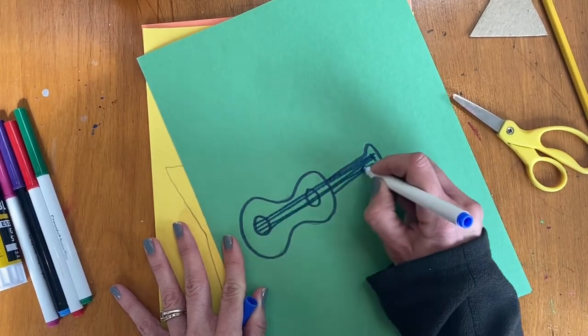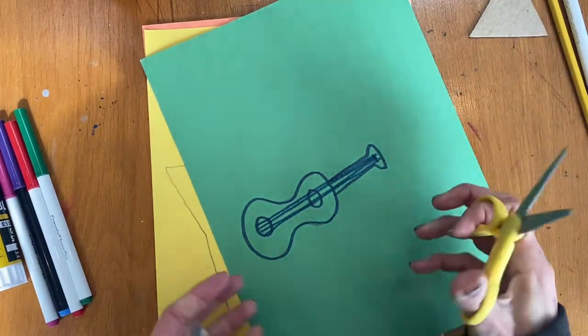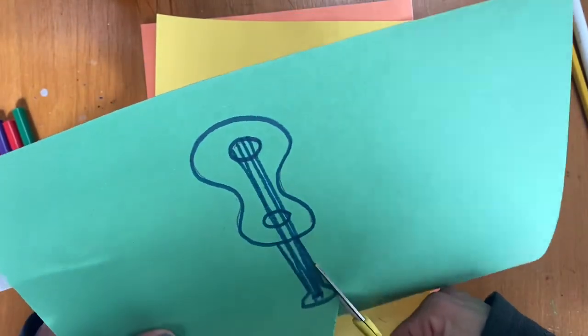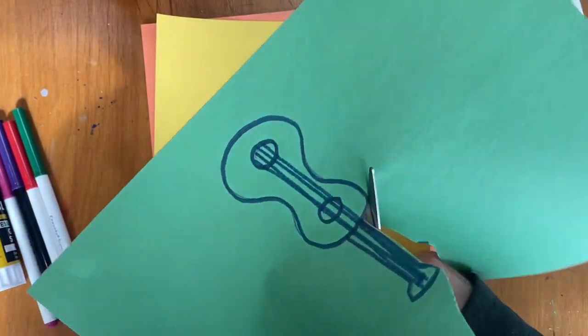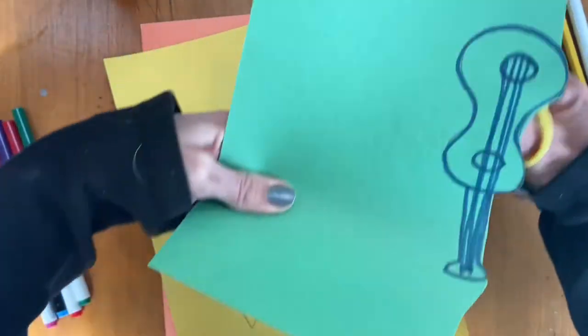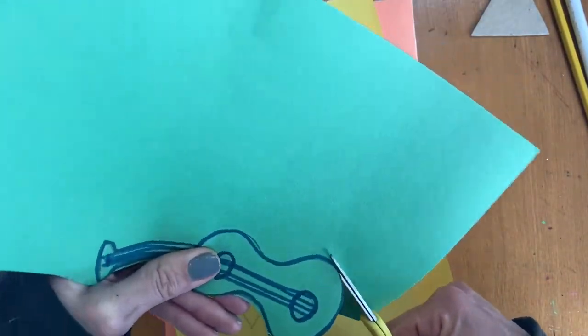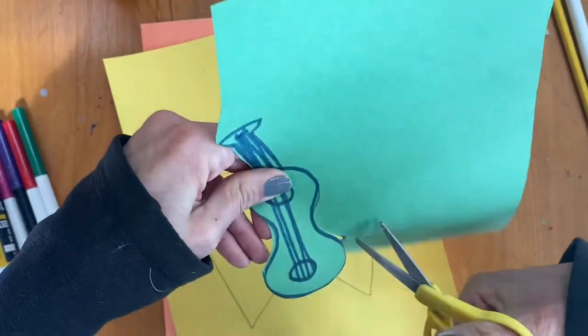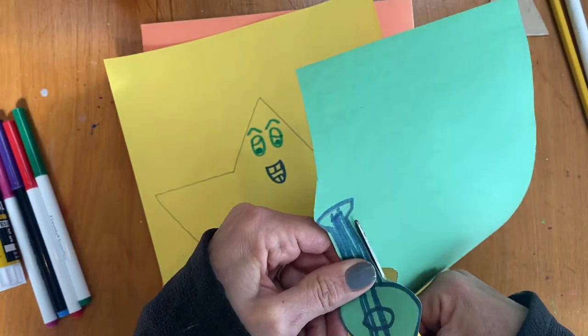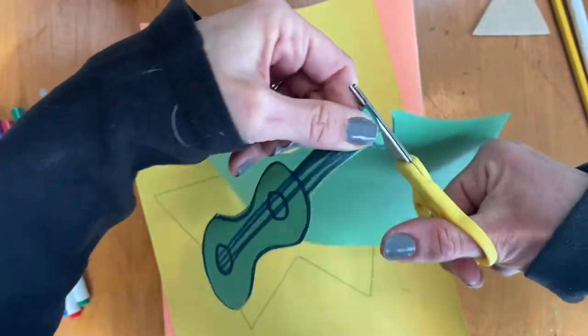It does not need to look like a perfect guitar because, remember, we're inspired by Picasso's Cubist Three Musicians where nothing looked very real. It was all a lot of shapes and lines and designs. So I'm going to cut out my, cut that half of the paper off, get that out of my way, cut the rest of my guitar off here. And I got a guitar now coming along for my guitar playing star.